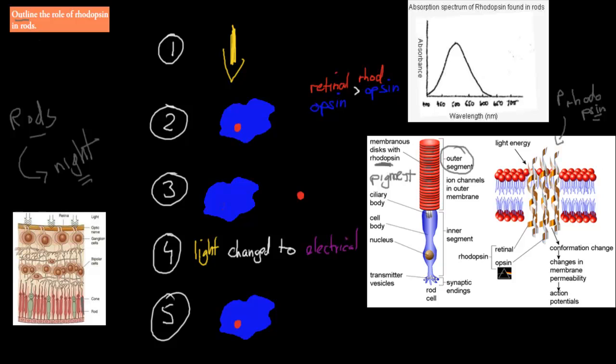It's fairly straightforward. You can imagine light will come in into the rod, and then it will go through these different discs here. Light will pass through these different discs. What's happening here is step one: light has entered the outer segment.